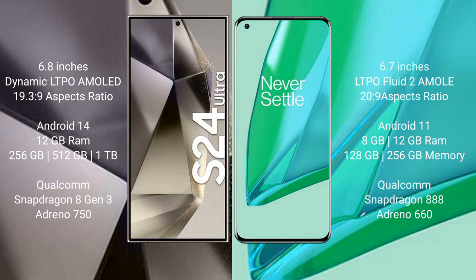Samsung Galaxy S24 Ultra runs on Android 14. OnePlus 9 Pro runs on Android 11. Samsung Galaxy S24 Ultra comes with 12GB RAM and 256GB, 512GB, or 1TB internal storage with a Qualcomm Snapdragon 8 Gen 3 processor.